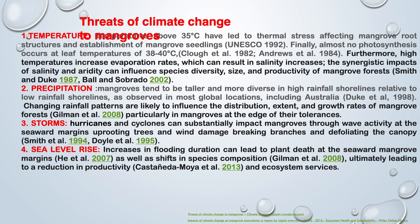Threats of climate change to mangrove — Temperature: Temperatures above 35 degrees centigrade have led to thermal stress affecting mangrove roots, structure, and establishment of mangrove seedlings. Almost no photosynthesis occurs at leaf temperatures of 38 to 40 degrees centigrade. Furthermore, high temperatures increase evaporation rates, which can result in salinity increase. The synergistic impact of salinity and aridity can influence species diversity, size, and productivity of mangrove forests.